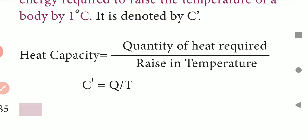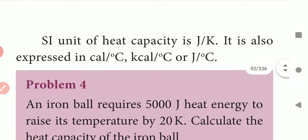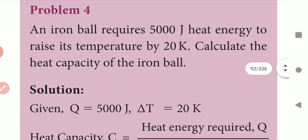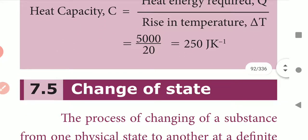Heat capacity C' equals Q divided by delta T. The unit of heat capacity is joule per kelvin, and it is also expressed in calories per degree Celsius, kilocalories per degree Celsius, or joules per degree Celsius. Example problem: an iron ball requires 500 joules of heat energy to raise its temperature by 20 kelvin. Calculate the heat capacity: C' = Q / delta T = 500 / 20 = 250 joule per kelvin.